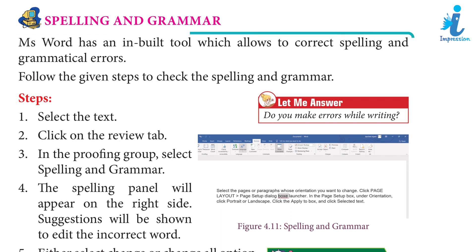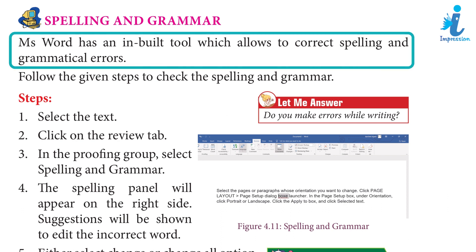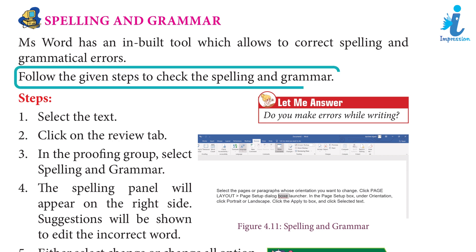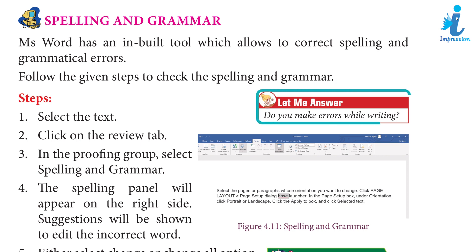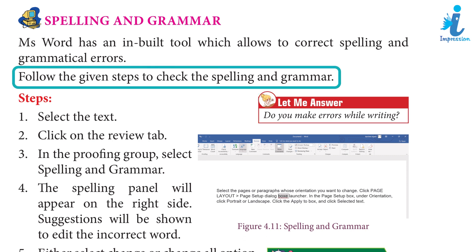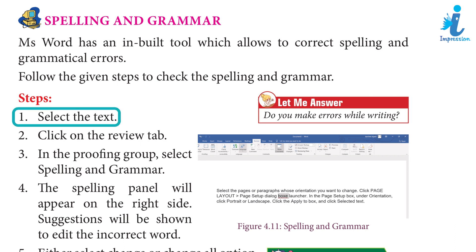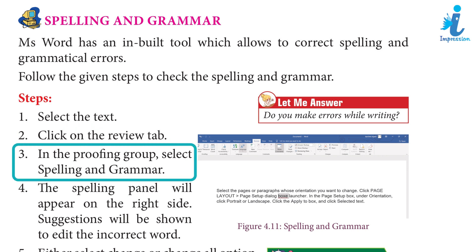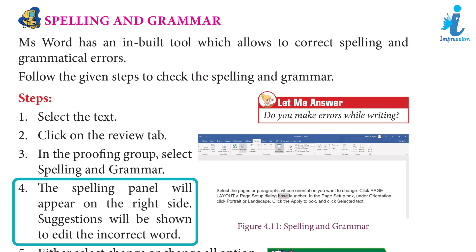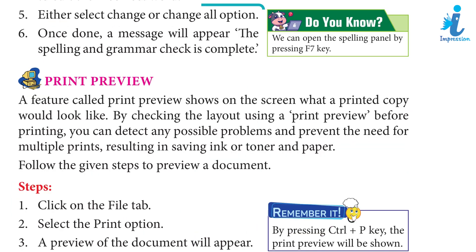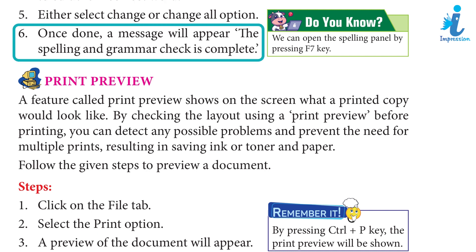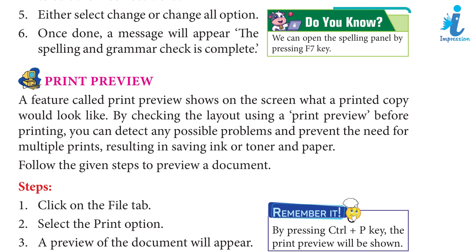Spelling and Grammar: MS Word has an inbuilt tool which allows you to correct spellings and grammatical errors. Do you make errors while writing? Follow the given steps to check the spelling and grammar. Step 1: Select the text. Step 2: Click on the Review tab. Step 3: In the Proofing group, select Spelling and Grammar. Step 4: The Spelling panel will appear on the right side; suggestions will be shown to edit the incorrect word. Step 5: Either select Change or Change All. Step 6: Once done, a message will appear: the spelling and grammar check is complete. Do you know? We can open the spelling panel by pressing the F7 key.